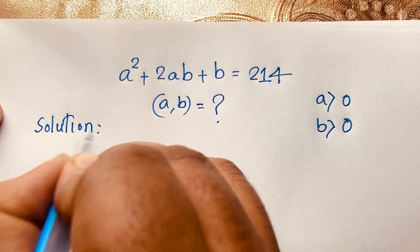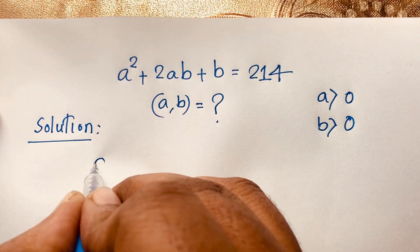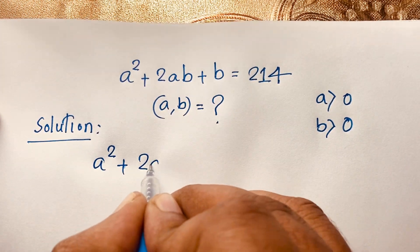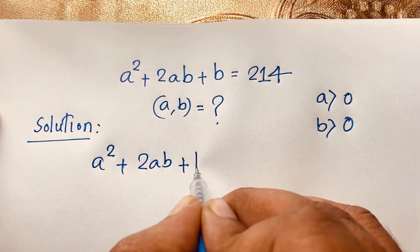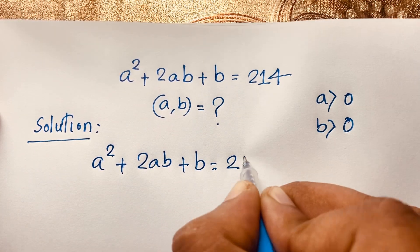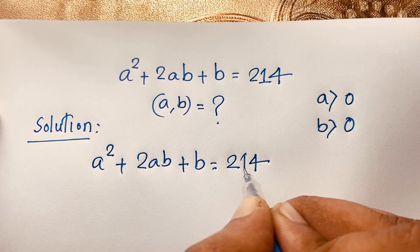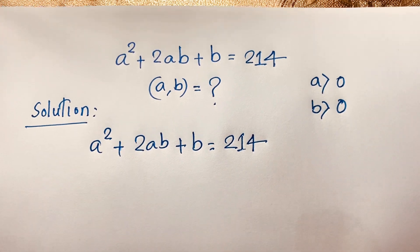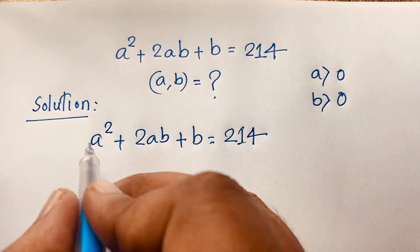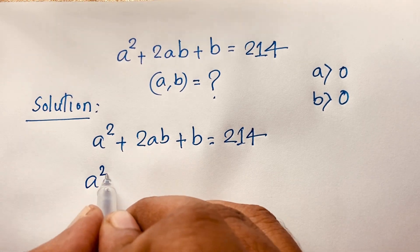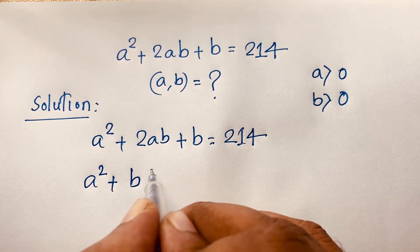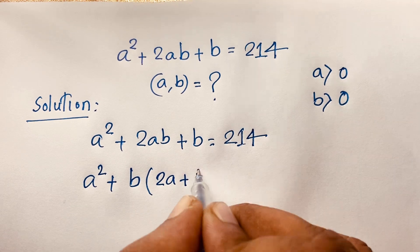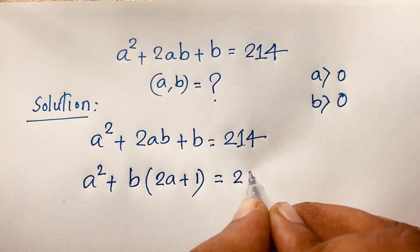Our question is a squared plus 2ab plus b is equal to 214. Now you can see here a squared and b are common, so it will be b times 2a plus 1, and here is 214.